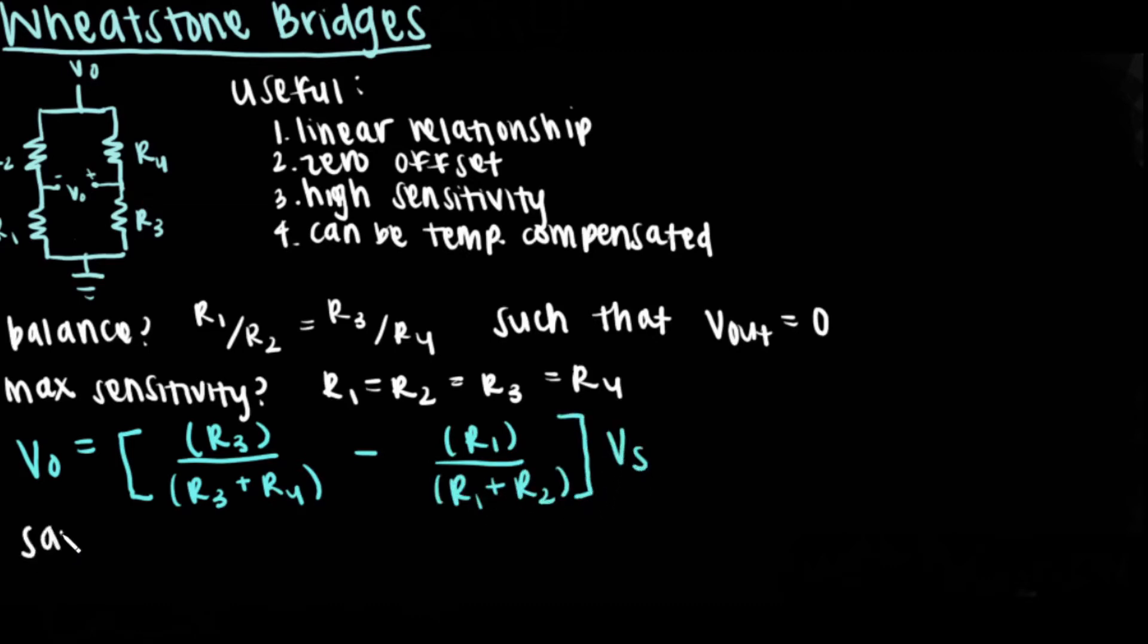Note that any of these resistors can be strain gauges. Let's say R3 is a strain gauge as indicated by a box around the resistor and a change in notation to Rg. This example now has a single strain gauge.